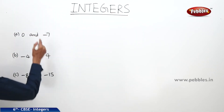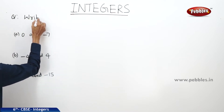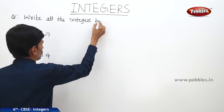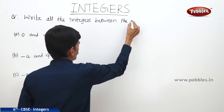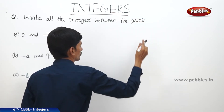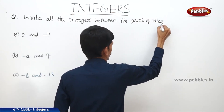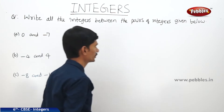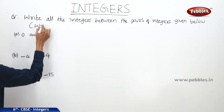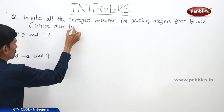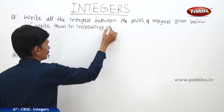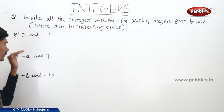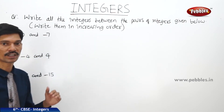Now let us see the next question. Write all the integers between the pairs of integers given below and write them in increasing order. We have to write all integers that lie between the given pairs and write them in increasing order. Increasing order means smallest to the biggest.